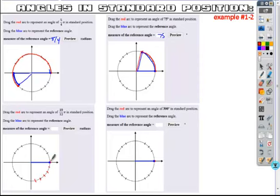So when I write my original angle, it's going to go from here all the way to here. So there's my 19 pi over 12.